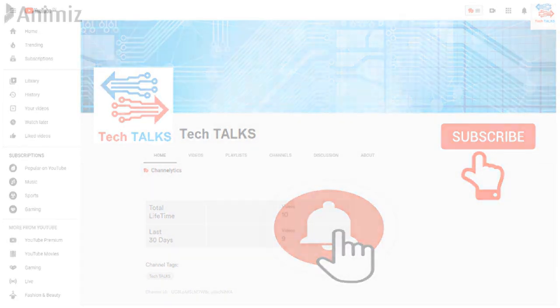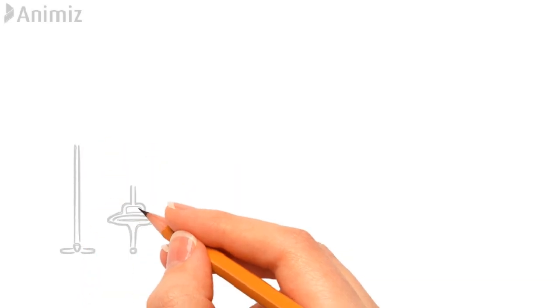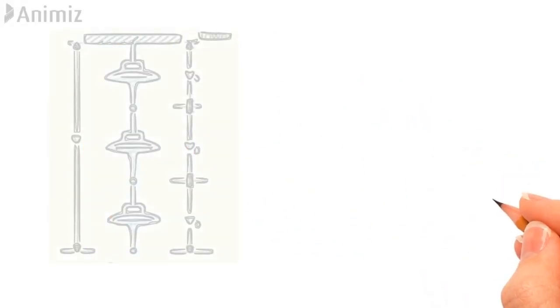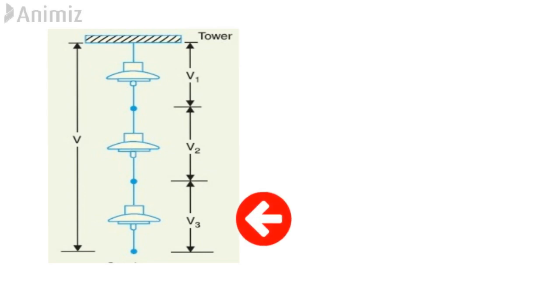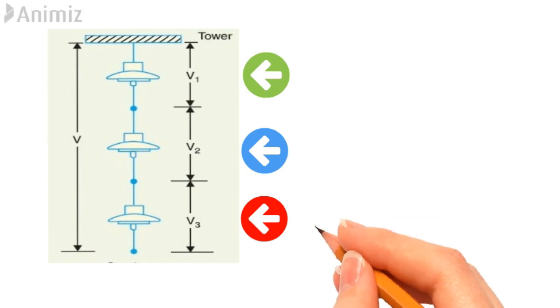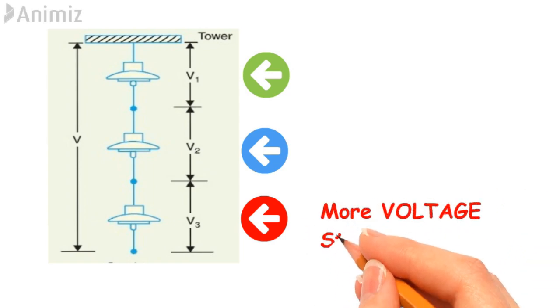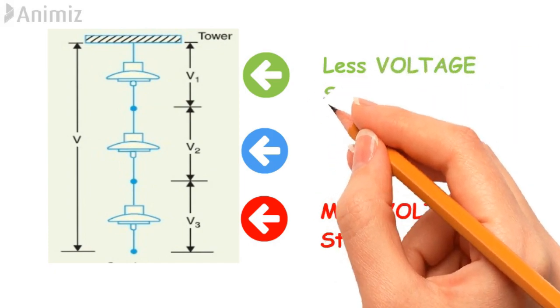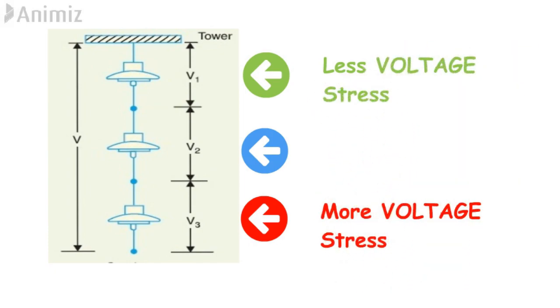One of the methods of equalizing the potential of suspended insulators of a string is grading the capacitance unit. In this method, voltages across each capacitor can be equalized by using discs with different capacitances. As we have seen, the insulator which is placed very near to the conductor experiences more voltage stress, so if we use different insulator plates with different capacitance values, it can be a solution to this problem.